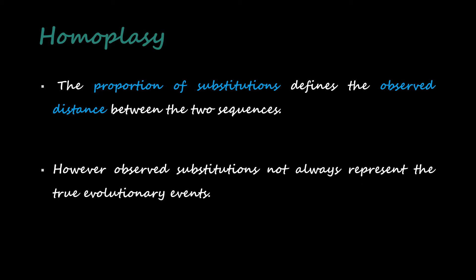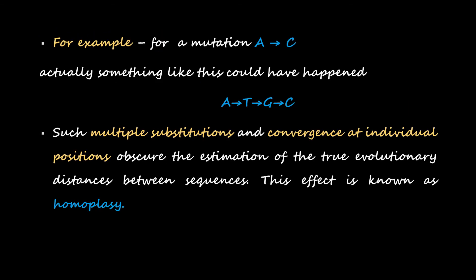However, observed substitutions do not always represent true evolutionary events. For example, for a mutation A to C, actually something like this could have happened: first A would have substituted with T, then G, then C. Such multiple substitutions and convergence at individual positions obscure the estimation of true evolutionary distances between sequences. This effect is known as homoplasy. Homoplasy may persist when you are constructing a phylogenetic tree but can be reduced with certain methods.